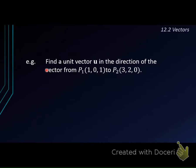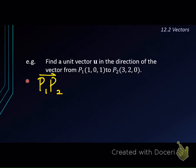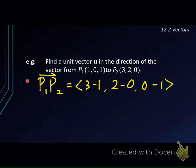Let's take a look at this example. We want to find a unit vector u in the direction of the vector from P1 to P2, where P1 is (1, 0, 1) and P2 is (3, 2, 0). P1 serves as the initial point and P2 as the terminal point. First, we find vector P1P2. We take x2 minus x1: 3 minus 1; y2 minus y1: 2 minus 0; and z2 minus z1: 0 minus 1. This gives us (2, 2, -1).